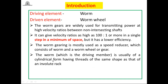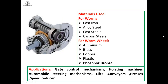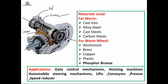The worm has threads of the same shape as the envelope of a rack. The worm is like a screw, and the worm wheel meshes with it. The axes are perpendicular but non-intersecting. For heavy-duty, high-power transmission, maximum speed reduction of 100 to 1 is possible, but in actual industrial practice for hoists or cranes, you don't go beyond 70 to 1.